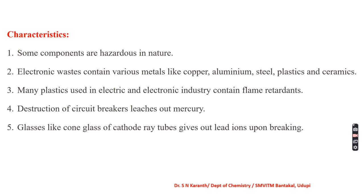The characteristics of e-waste: some components are hazardous in nature because harmful components like mercury and lead are used during manufacturing, even for soldering purposes. Electronic waste also contains various metals like aluminum and steel, as well as plastics and ceramics. Many plastics used in the electronics industry contain flame retardants, making it difficult to dispose of these materials even through incineration.